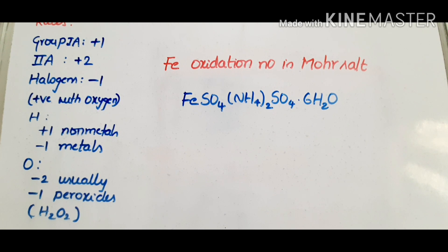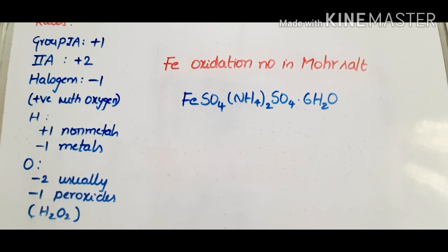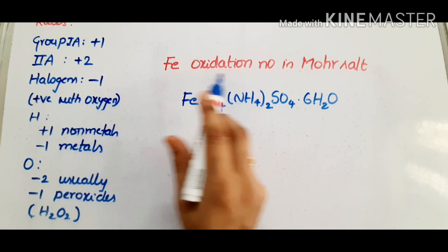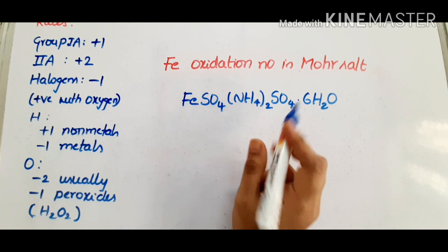Today's topic is problems on calculation of oxidation number and finding out the peroxide linkages by calculating the oxidation number of an atom. Let's go into the topic. The first basic example is finding the iron oxidation number in Mohr's salt.